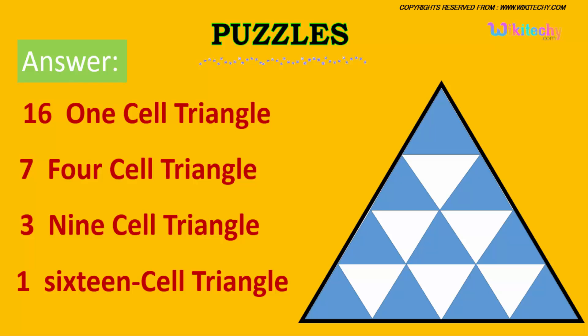You are able to see 16 one-cell triangles, 7 four-cell, 3 nine-cell, and 1 sixteen-cell.